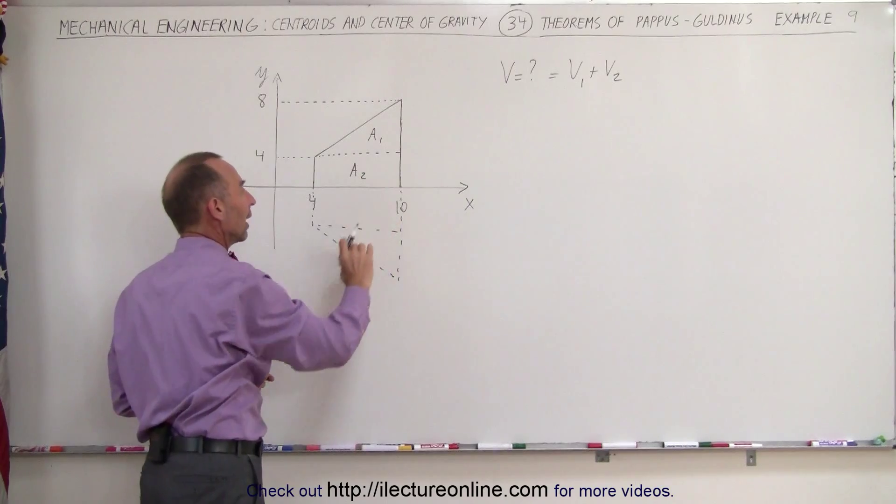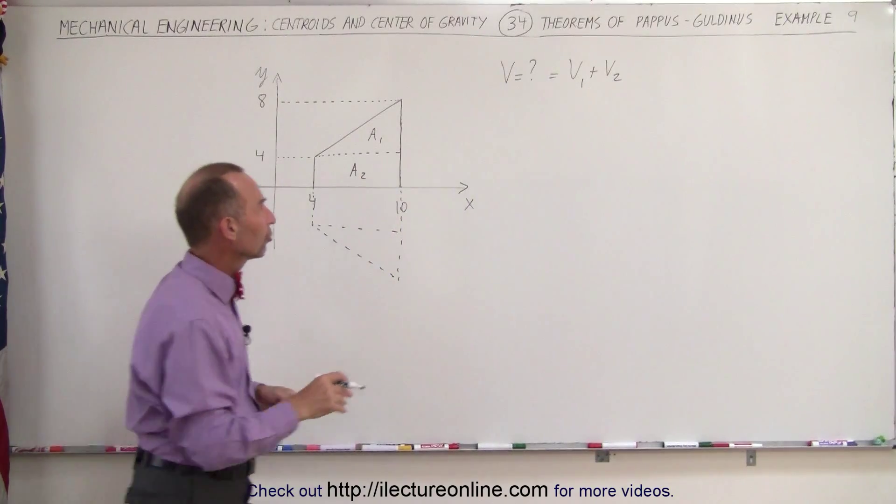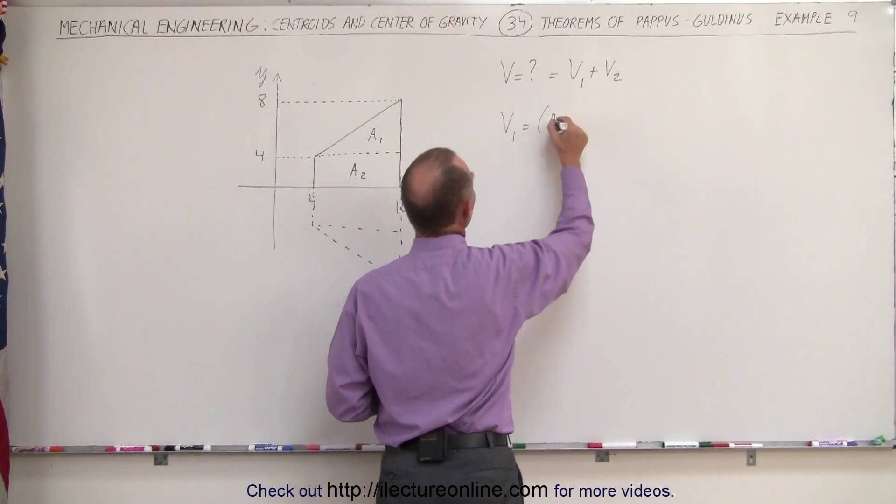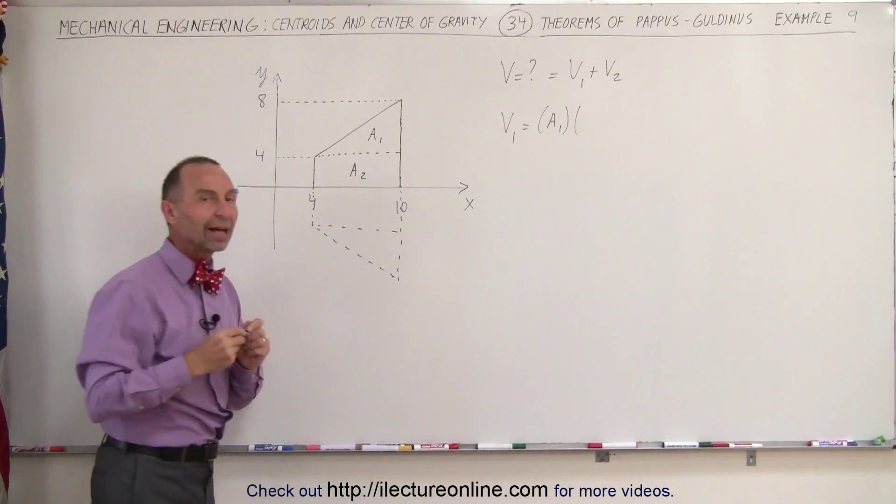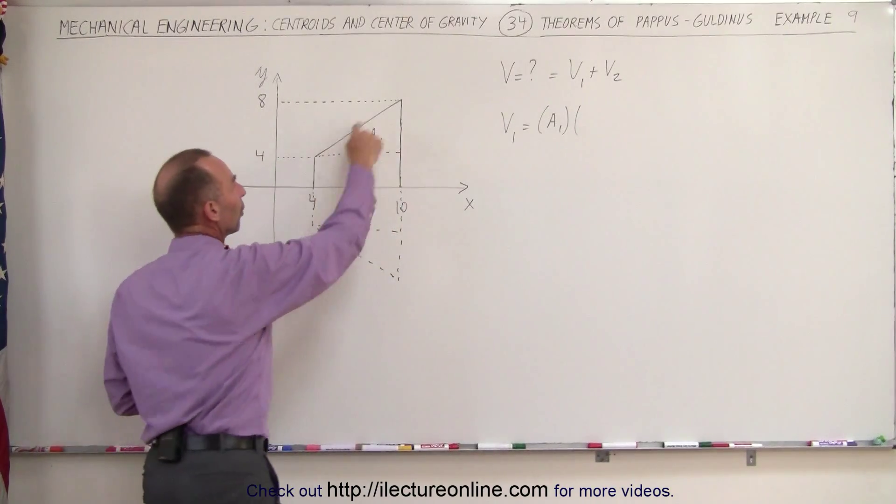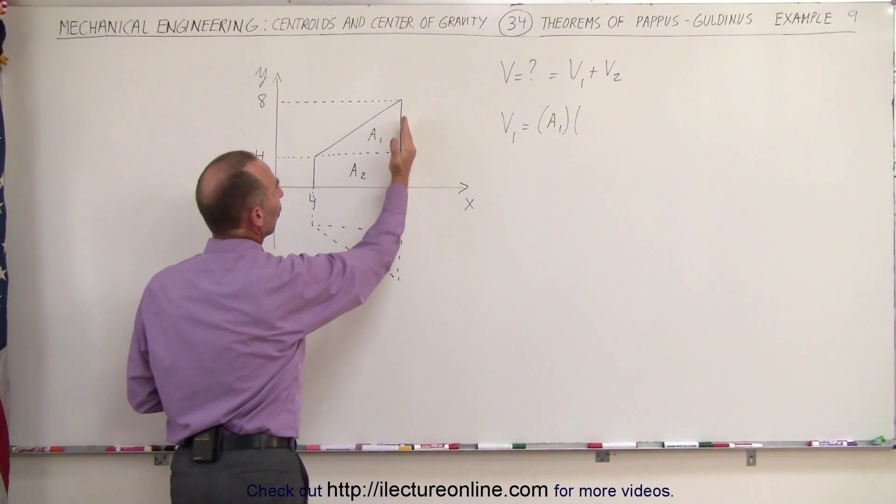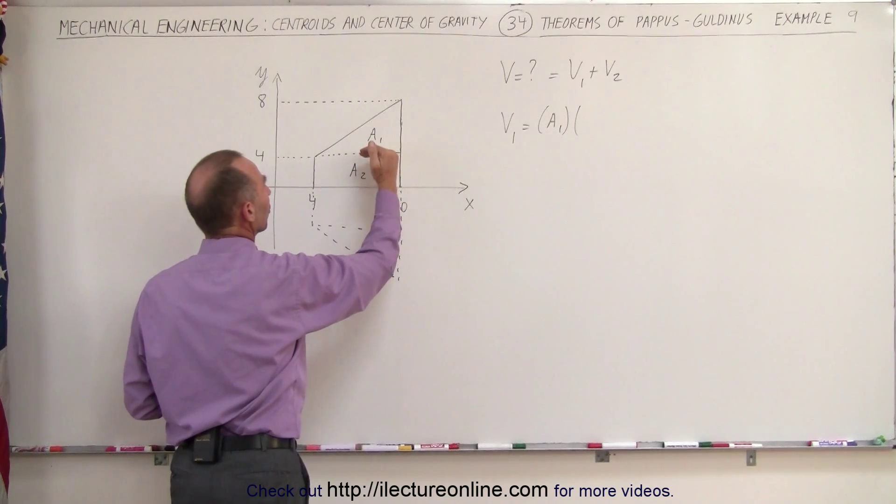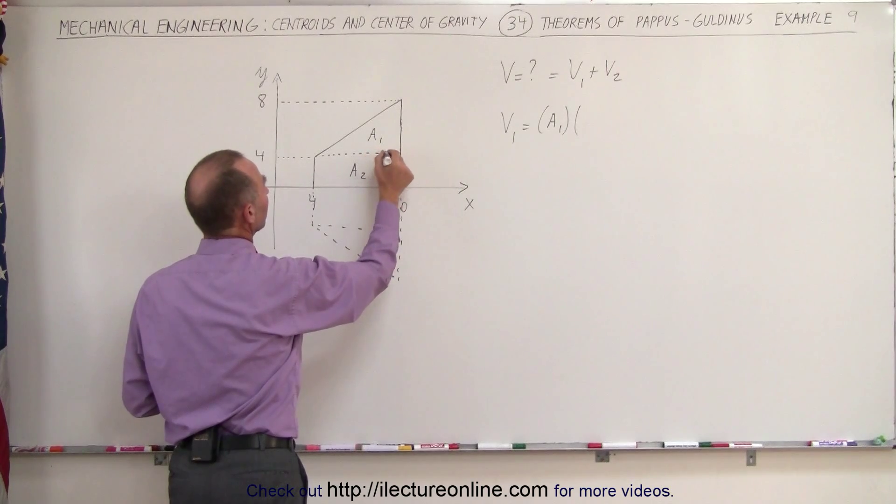When we rotate area 1 around, we get the outer portion of that truncated cone. V1 would be equal to area 1 times the distance covered by the centroid of that area. Now since this portion here is triangular in shape, the centroid can be found one-third the distance from the flat portion to the peak and one-third the distance from the flat portion to the peak in this direction.